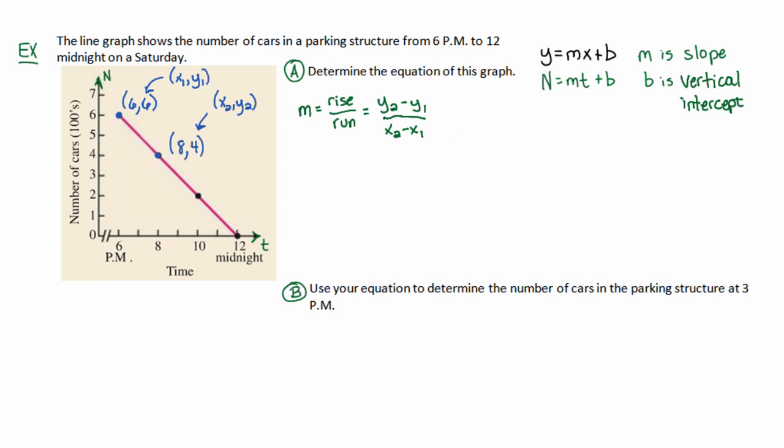And when I write this out, I make sure that my y values are on top, and that I stack them over their corresponding x values. So, y value on top, I'll start with a fraction bar, the y value of 4 for this point, and I'll stack it over its x value of 8. Minus, minus. The y value for the other point is 6, and its corresponding x value is also 6. So, when I do the subtraction, I get a negative 2 over 2, or in other words, a negative 1.